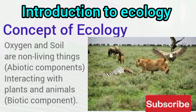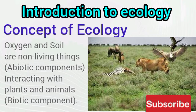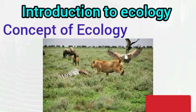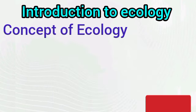For example, animals take oxygen from the atmosphere and rely on the soil to stand. The plants rely on the nutrients in the soil to survive and grow, and animals also pass out waste which enriches the soil. So there is constant interaction among the living organisms as well as between the living organisms and their environment. This concept forms what is termed ecology.